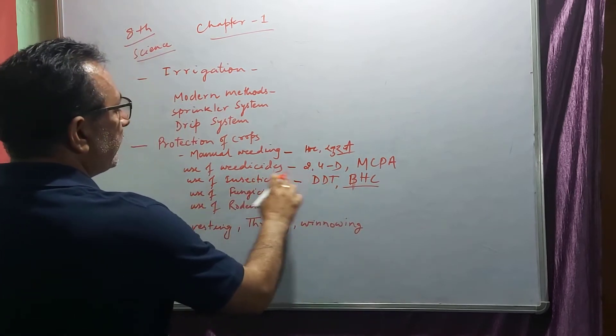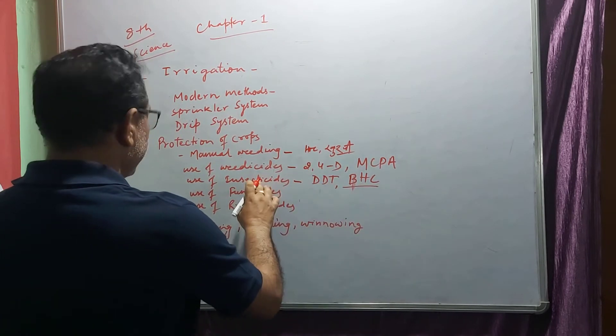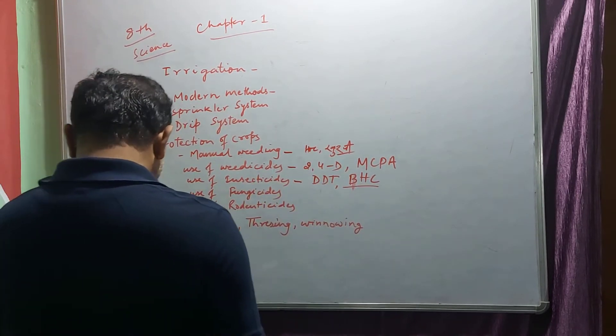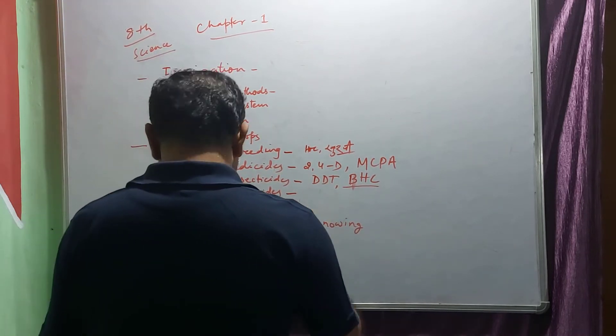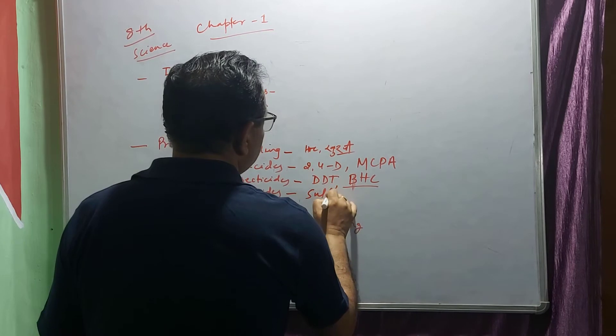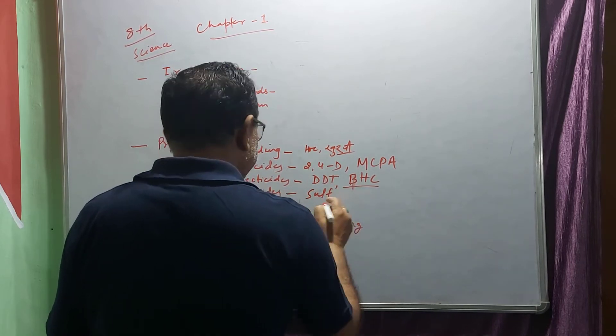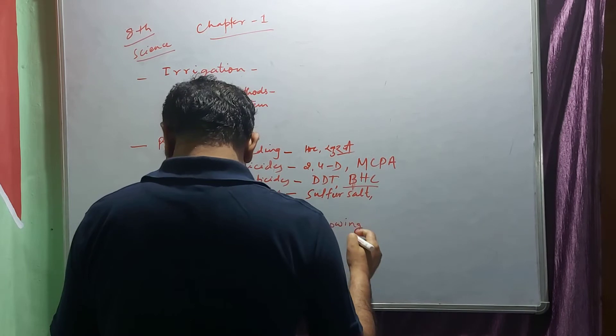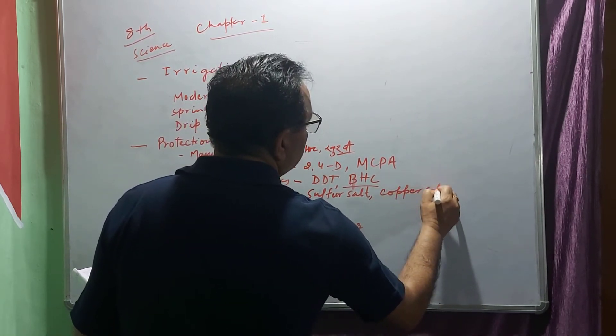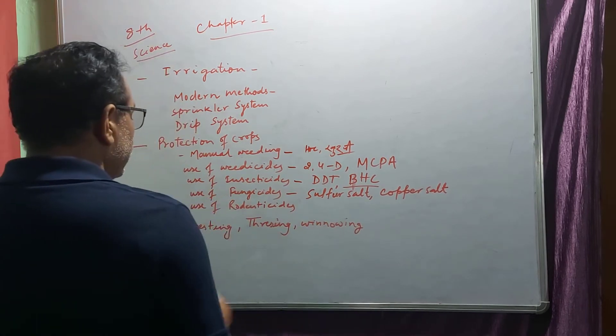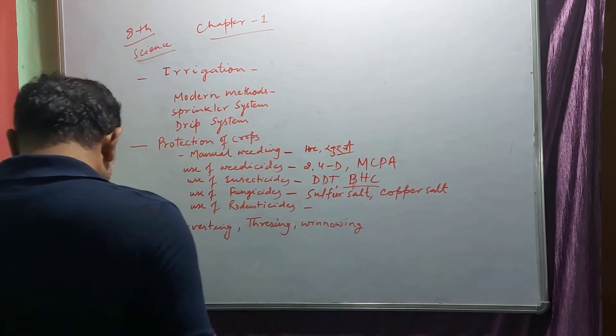For fungus we use chemicals like sulfur salt and copper salt. For rodents we also use specific treatments.